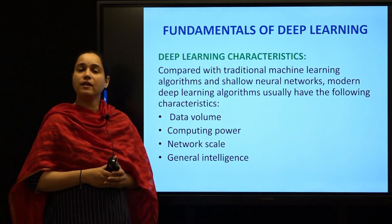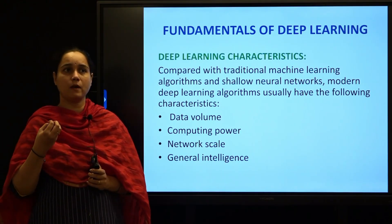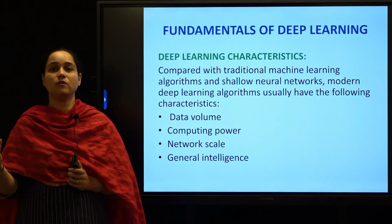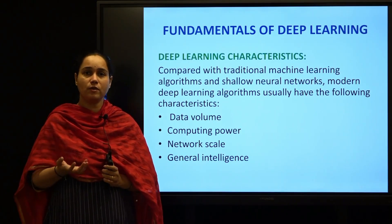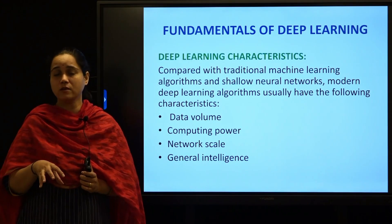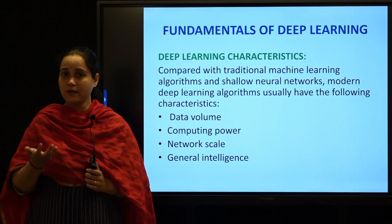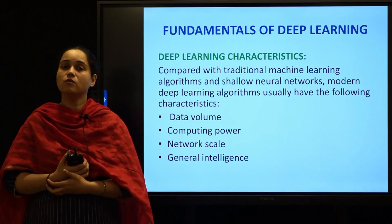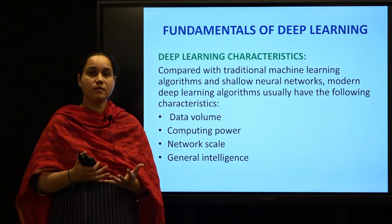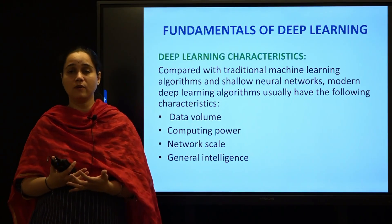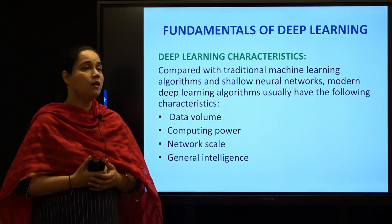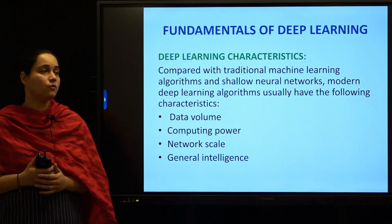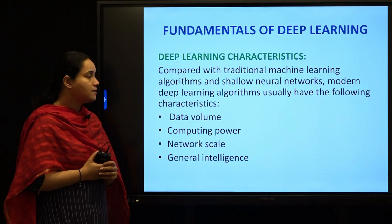The fourth characteristic is general intelligence. Our whole purpose is to impart human-level intelligence to the machine. This general intelligence can be imparted via deep learning algorithms and deep neural networks, which helps the machine in applications like computer vision and NLP. All four characteristics make deep learning algorithms and deep neural networks very important in today's era, helping give human-like intelligence to machines.